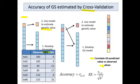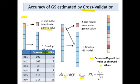Here's what your data might look like: six individuals from your training population, with their observed phenotype in one column and their predicted value — obtained through the cross-validation process — in another column. You get the correlation of the observed with the predicted, and that is your accuracy of genomic selection.